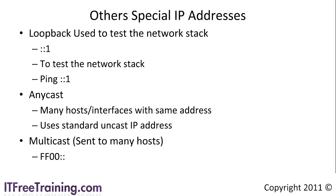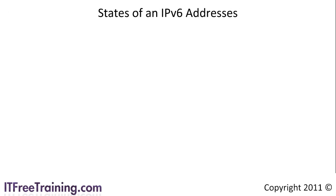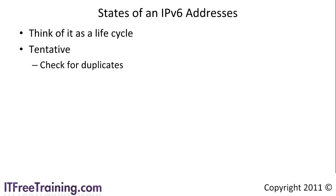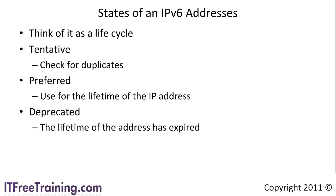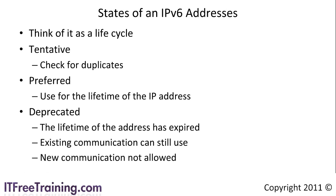IP version 6 addresses have what is called a state — think of it as a life cycle. The IP address starts its life as tentative. In this brief period, the computer will check the network for duplicates. If no duplicates are found, the IP address changes its state to preferred. When the IP address is first created, the router, DHCP server, or auto-configuration will give the IP address a time to live. The preferred state is used for the lifetime of the IP address. The IP address state will change to deprecated once the lifetime of the address has expired. All existing communication will still work, however no new communication will be allowed to use this IP address. As long as your IP address stays preferred, you should not have any problems.